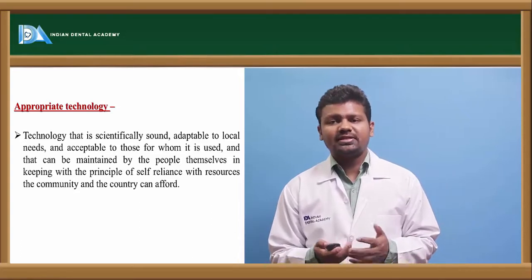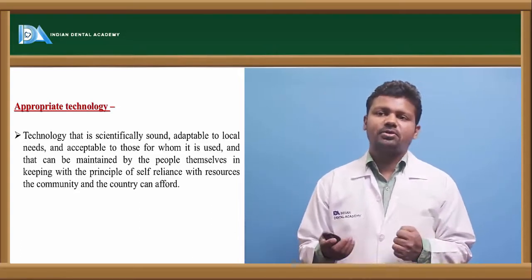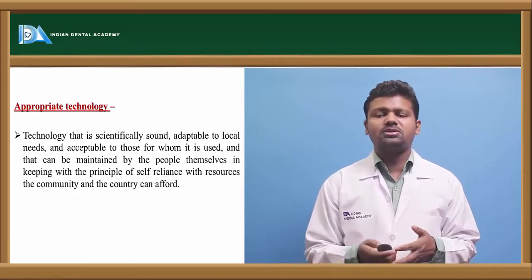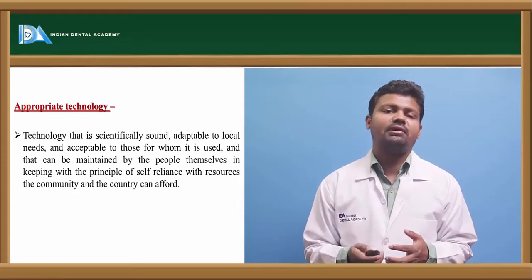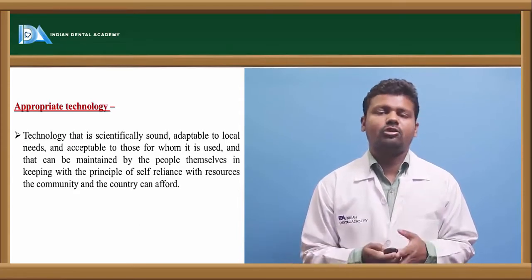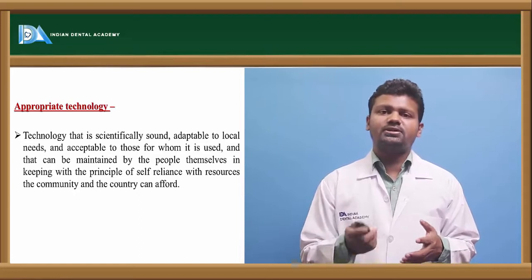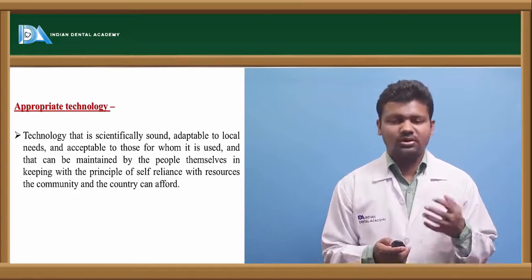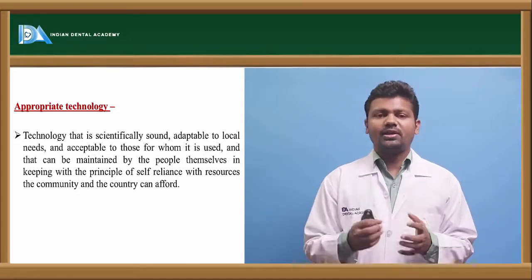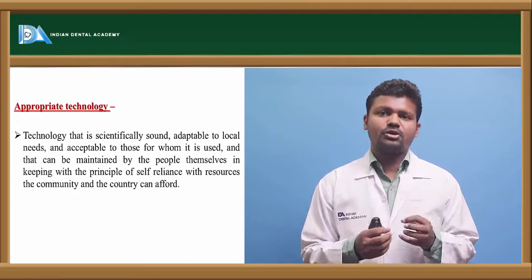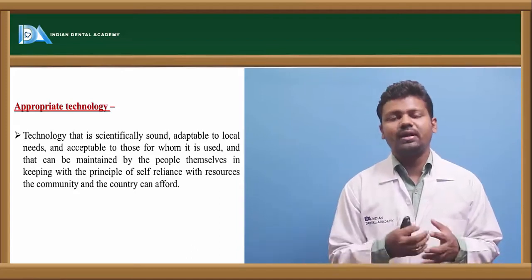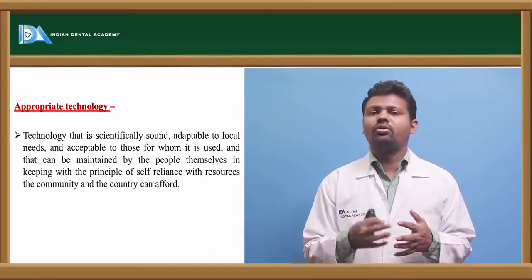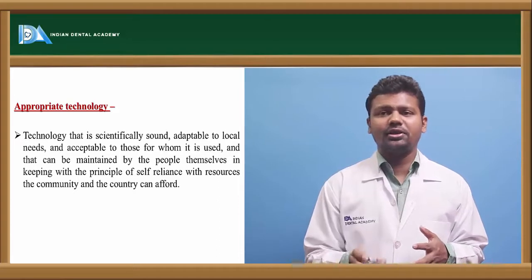Appropriate technology should be scientifically sound, adaptable to local needs, and acceptable to those who use it. It can be maintained by the people themselves, keeping in the principle of self-reliance, using resources the community and country can afford. The fifth principle is focus on prevention — more focus should be placed on prevention, as disease prevented at an early stage will not further progress and will not harm the individual.